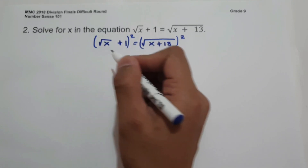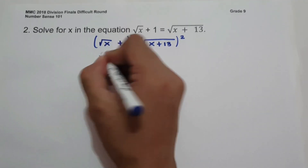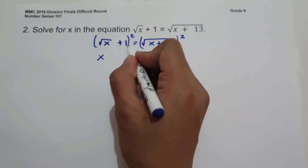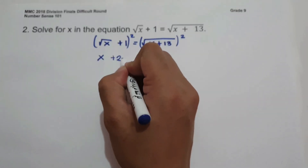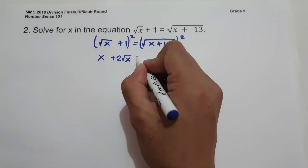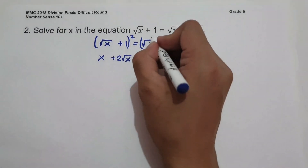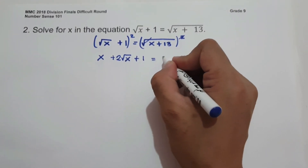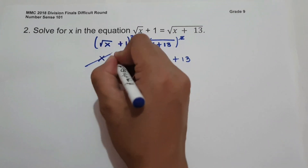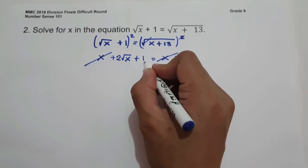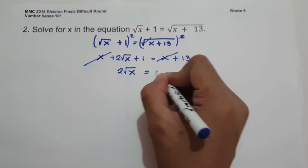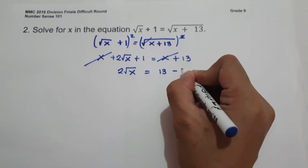Squaring the left side: √X × √X = X, then √X × 1 × 2 = 2√X, and 1 × 1 = 1. On the right side we have X + 13. Cancelling X from both sides and moving 1 to the right: 2√X = 13 − 1.